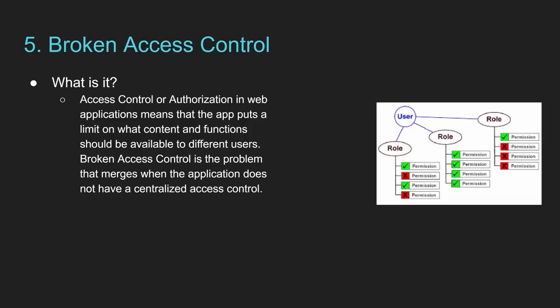A good way to prevent this is to always follow the principle of least privilege — meaning you should never give a given role more access than it needs. For example, there is no reason for an admin to be able to see or change passwords of roles beneath them. If you use a secure way of storing passwords through hashing, not even the developers will be able to see them. These are definitely things you should consider when implementing access control within your web application.